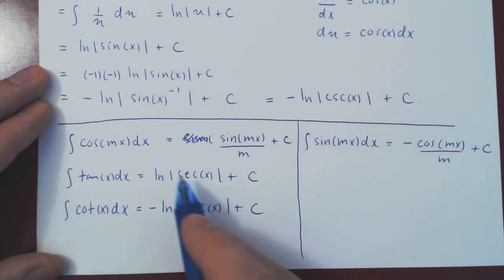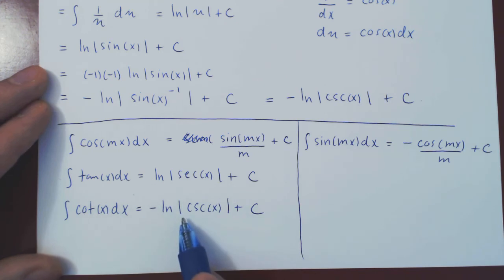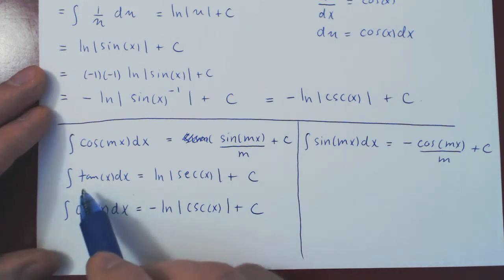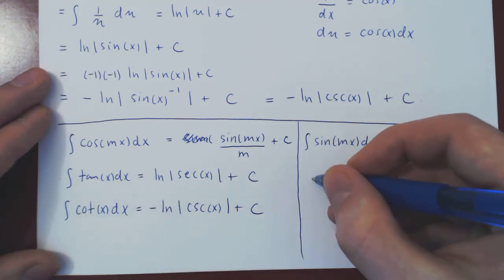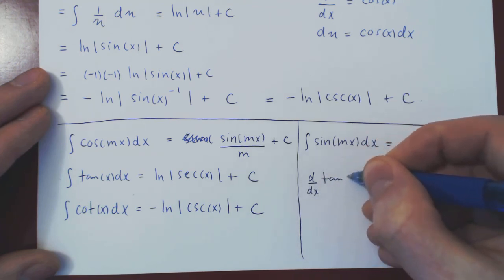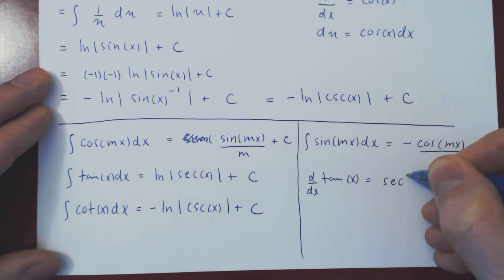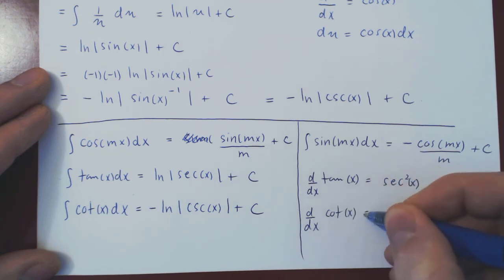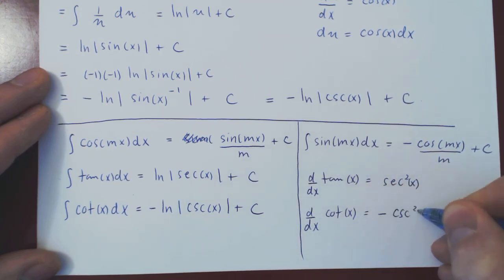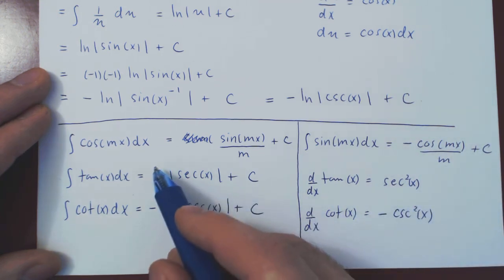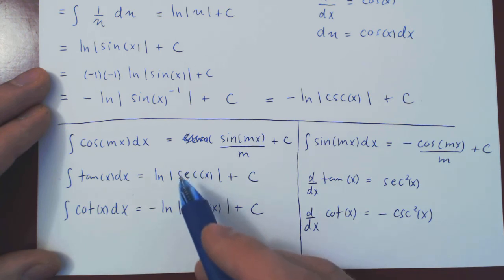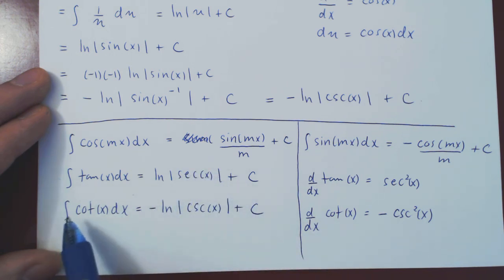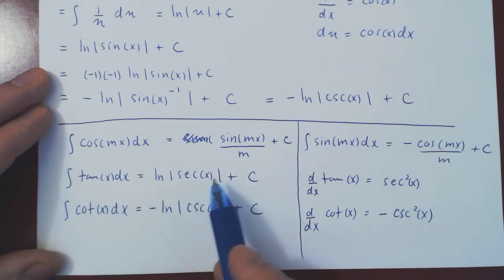You can appreciate why tweaking the original answers to the secant and cosecant forms helps you remember these integrals alongside the differentiation rules. The derivative of tan x is positive sec squared x; the derivative of cot x is negative csc squared x. And there's the same positive-negative relationship: the integral of tangent is ln of |sec x|, and the integral of cotangent is negative ln of |csc x|.